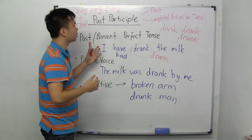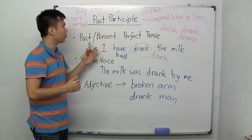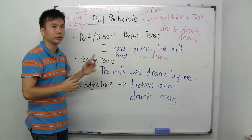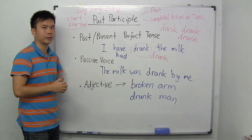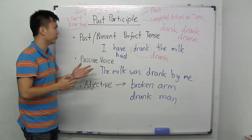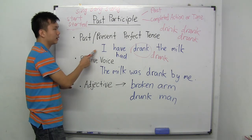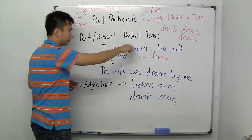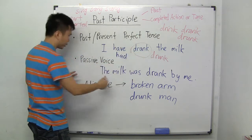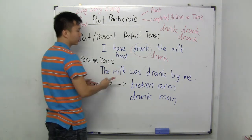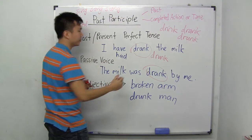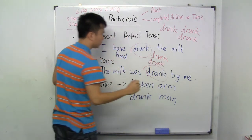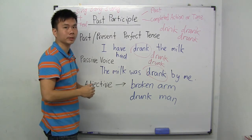So that's one example of where past participle is used. Another time when you use the past participle is for the passive voice. What is the passive voice? You see this sentence: 'I have drunk the milk' — that's active voice. For passive voice, you bring 'the milk' to the front: 'The milk was drunk by me.' This is another case where we use the past participle.